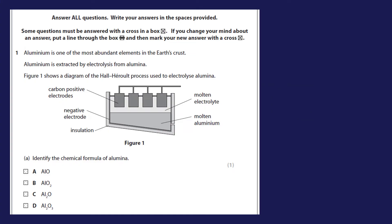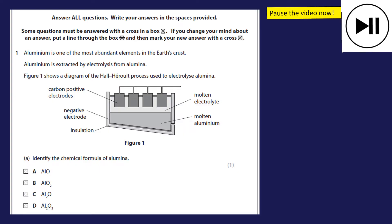So here we have question one. It's looking at aluminium — it says aluminium is extracted by electrolysis of alumina. There should be a link appearing now for the video where I talked about electrolysis and making aluminium. You can pause this video and have a go at each question. Identify the chemical formula of alumina — well that's aluminium oxide, Al₂O₃. Make sure to put a cross at Al₂O₃ — it's alumina.